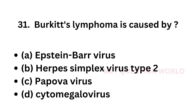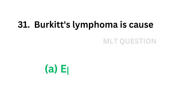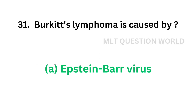Question number 31: Burkitt's lymphoma is caused by — option A: Epstein-Barr virus, option B: herpes simplex virus type 2, option C: papovavirus, option D: cytomegalovirus. The correct answer is option A, Epstein-Barr virus. Burkitt's lymphoma is caused by Epstein-Barr virus.